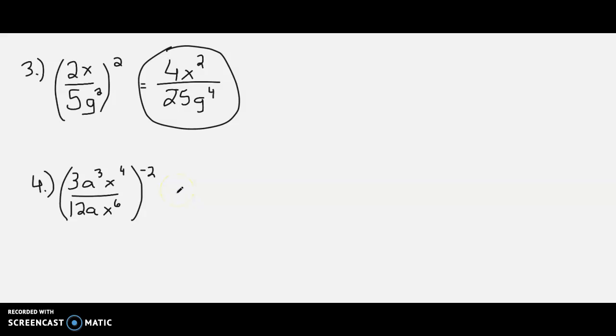For number 4, notice the negative 2 exponent. First thing we want to do is flip everything. 12a x to the 6th for the numerator, and 3a to the 3rd, x to the 4th in the denominator. And the reason we flip it is to change the sign on the outside exponent.